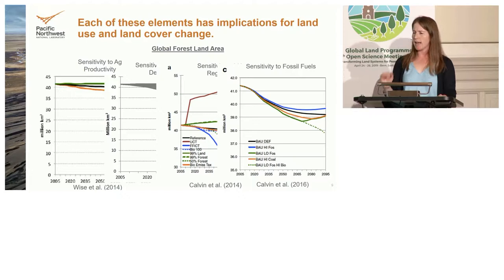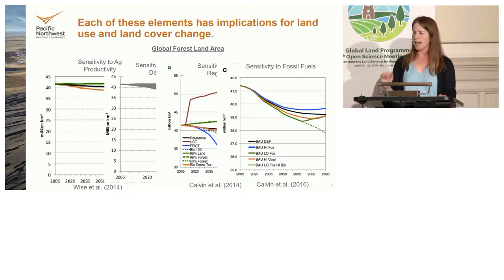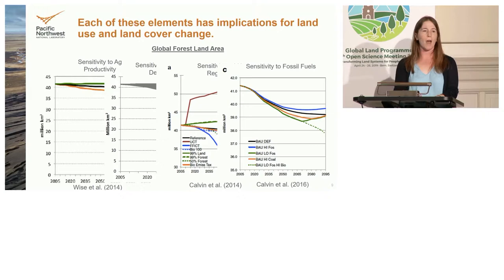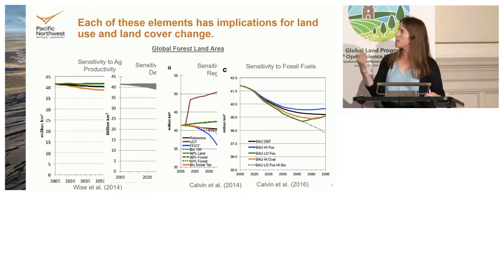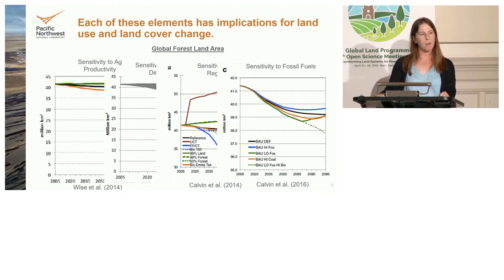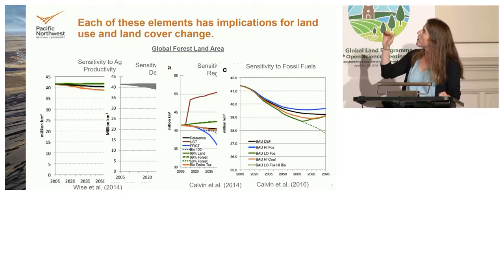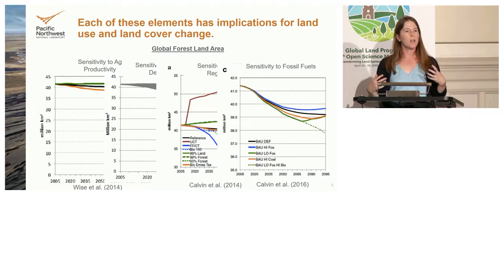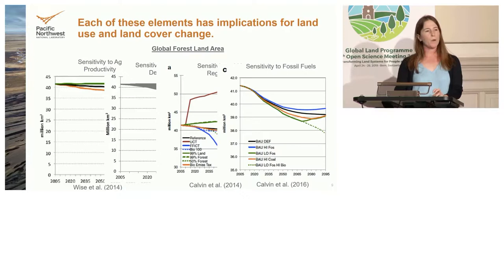It's not just what happens on land that matters — what happens elsewhere also influences land. Things like how much water or energy you have available affect the land surface. Looking at how costly fossil fuels are: the scenarios with the highest amount of forest are where fossil fuels are cheapest. The more available and less expensive fossil fuels are, the more forest you keep, because you use land less for energy.